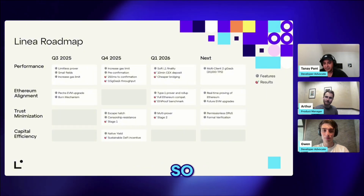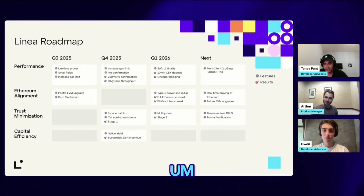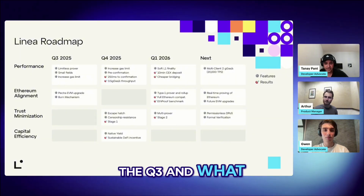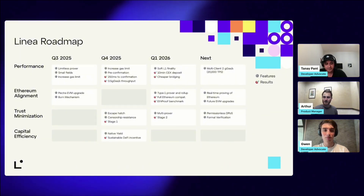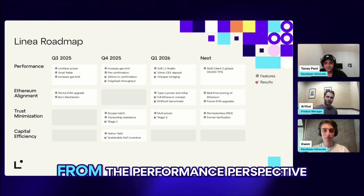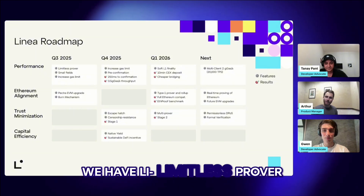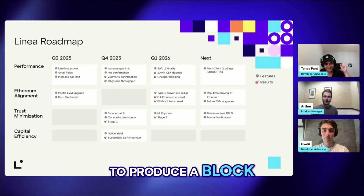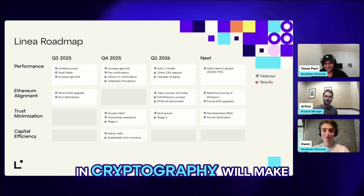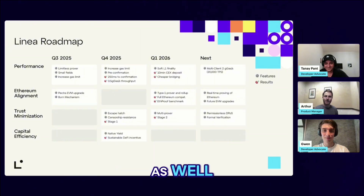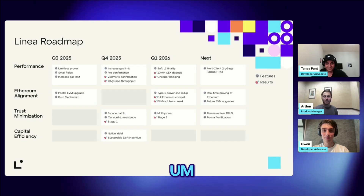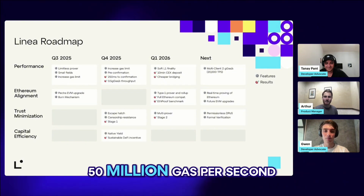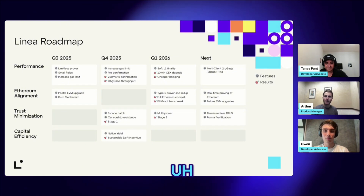Let's talk about the timelines and walk through some of the features, starting with Q3. Q3 will be a big quarter from the performance perspective. We have the limitless prover coming, which will 10x the speed at which we are able to produce a block. The small fields upgrade in cryptography will also make the prover 10x faster, and with that we plan to increase the gas limits — the first increase targets a 2x increase to approximately 50 million gas per second, which is conservative, but we want to scale progressively.